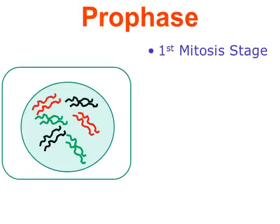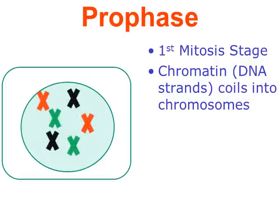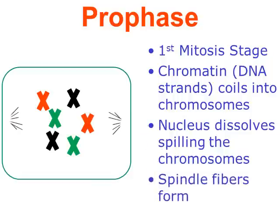Mitosis begins with the step called prophase — the first mitosis stage. One of the notable features is that the stringy version of DNA, called chromatin, is going to coil into these X-shaped chromosomes. Watch the animation: the stringy threads of DNA disappear and the X-shaped chromosomes appear. Next, the nucleus is going to dissolve — and there it goes — and the chromosomes are simply spilled into the cytoplasm of the cell. Finally, objects called spindle fibers are going to form from the centrioles. We'll show their job in just a moment — spindle fibers begin to grow during the prophase stage.